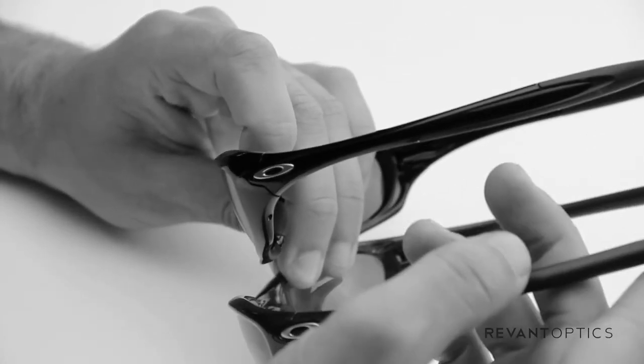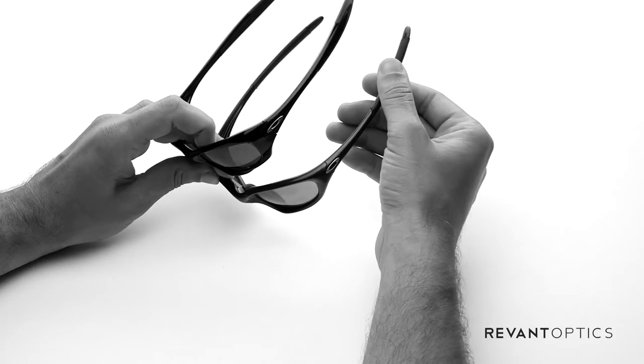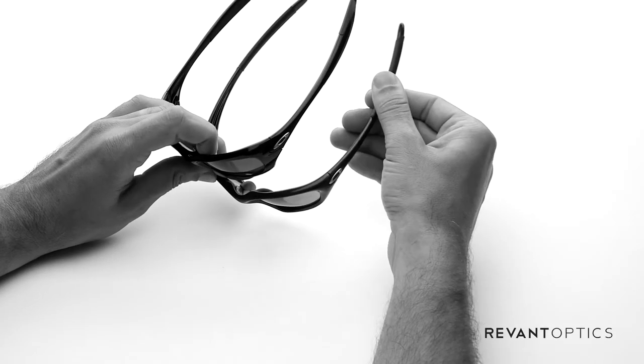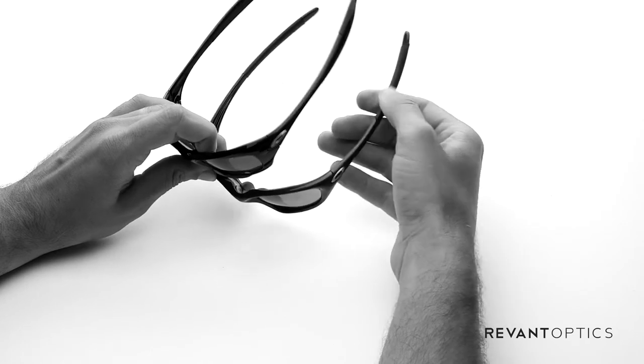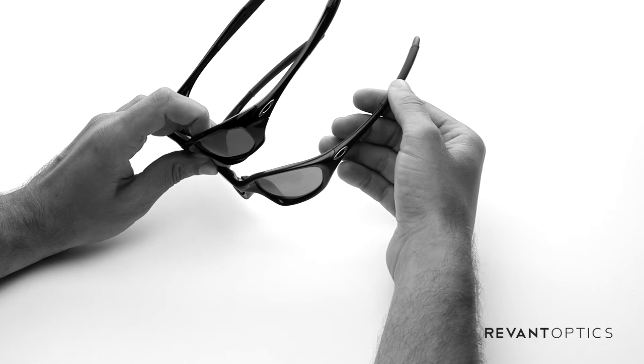But one of the main differences is this rubber piece on here, which Oakley calls Unobtainium. This piece here is a lot longer on the 2000 model of the Oakley XX.